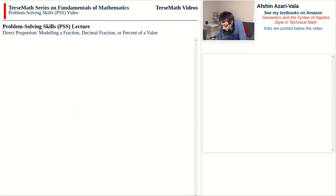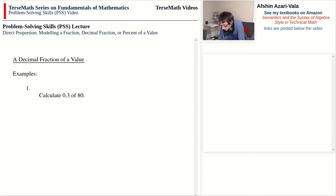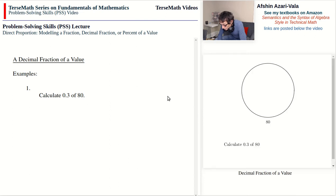Now we talk about working out a decimal fraction of a value. As our first example, we have the same problem posed at the beginning: calculate three-tenths of 80. We want to show that we can work this out by multiplying three-tenths by 80. The total is represented by the circle again, this time 80, and to find three-tenths of 80 means 80 should be divided into 10 parts, then we take three parts.